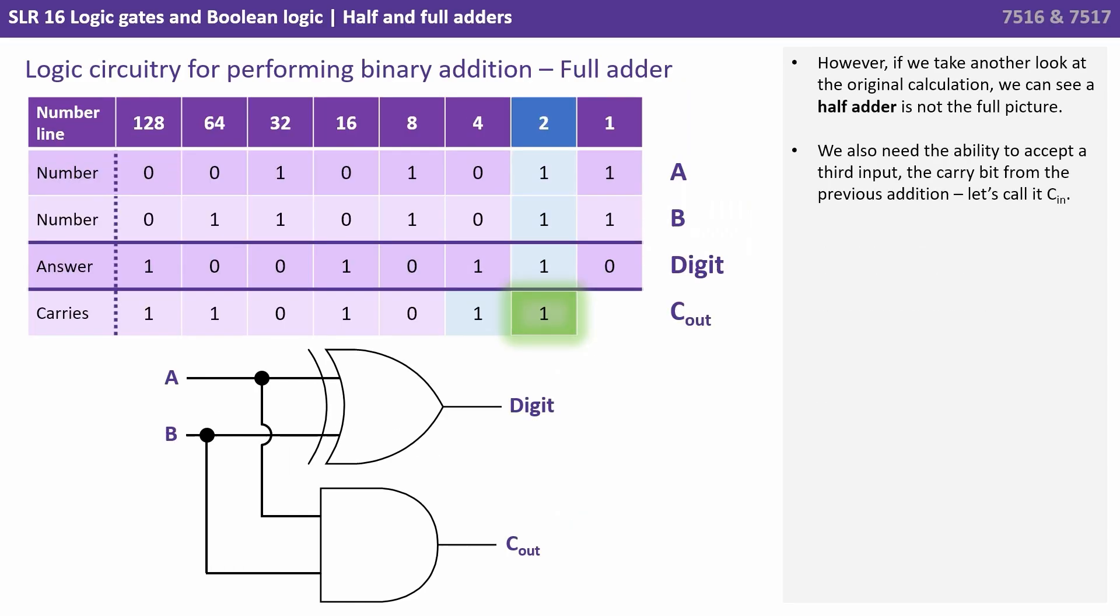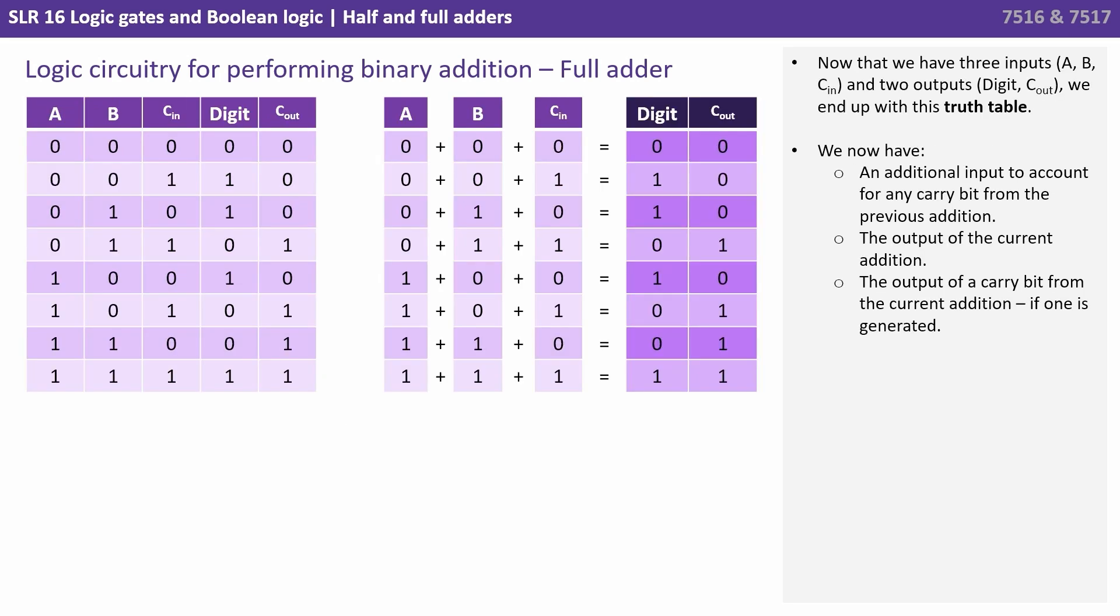However if we take another look at the original calculation we can see a half adder is not the full picture. We also need the ability to accept a third input and that's the carry bit from any previous addition. So let's call that c in. Now we've got three inputs a, b and c in and two outputs digit and c out. We end up with the following truth table. We now have an additional input to account for any carry bit from the previous addition. The output of the current addition and the output of a carry bit from the current addition if one is generated.